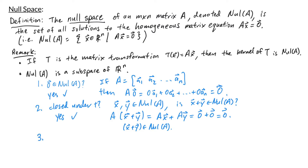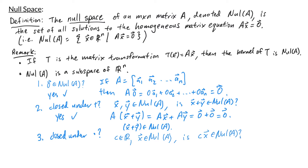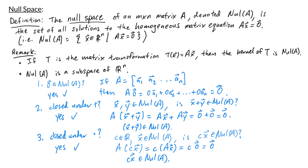Lastly, we want to check if the null space of A is closed under scalar multiplication. Take an arbitrary scalar C and a vector x in the null space of A. Is C times x also in the null space? We compute A times (C times x), which can be rewritten as C times Ax. Since x is in the null space, Ax equals zero, so we get C times zero, which is the zero vector. Therefore Cx is in the null space of A. Since all three conditions are satisfied, the null space is a subspace of Rn.